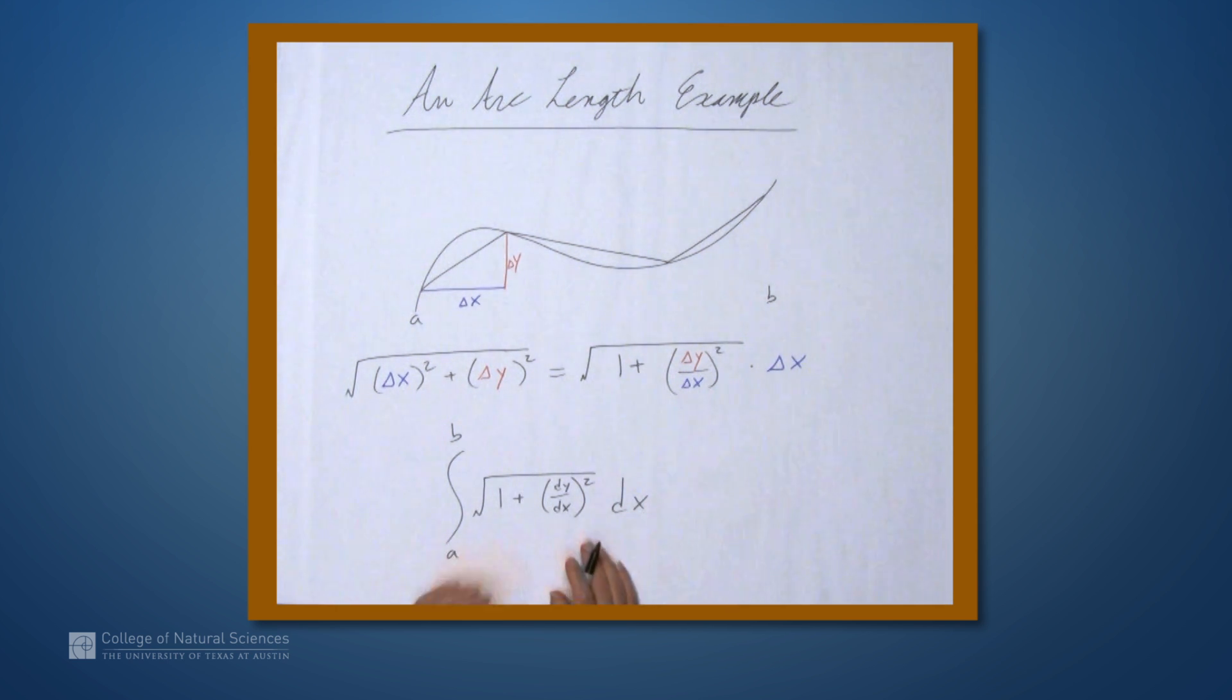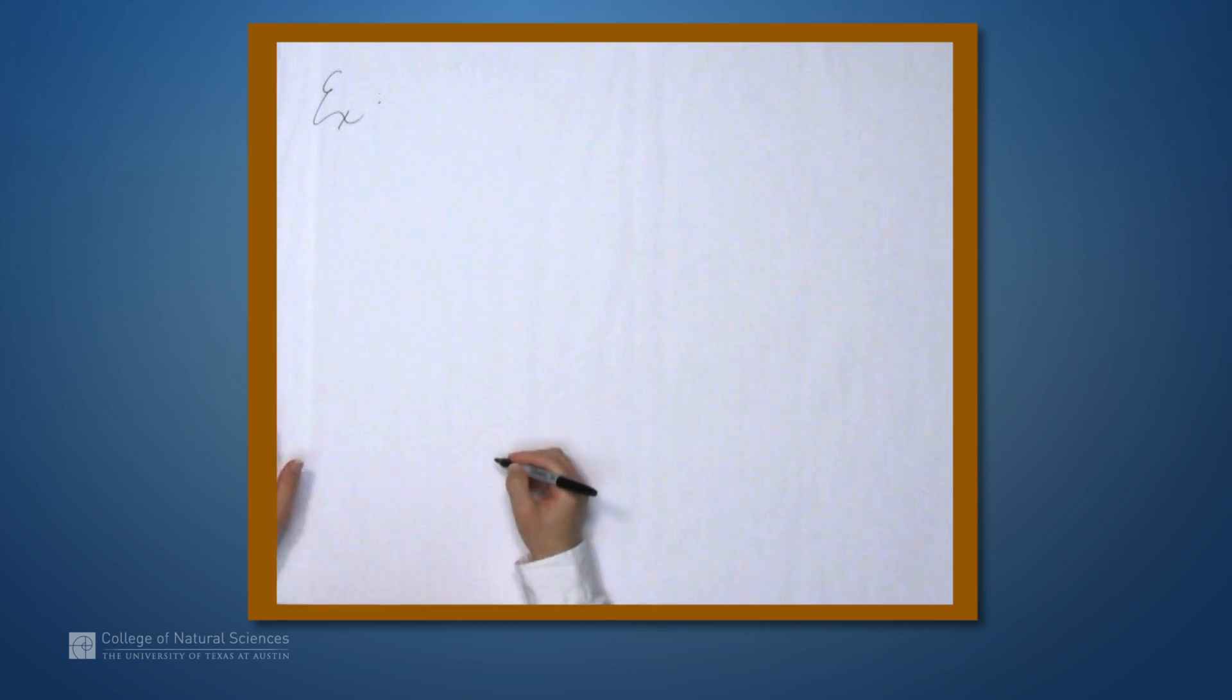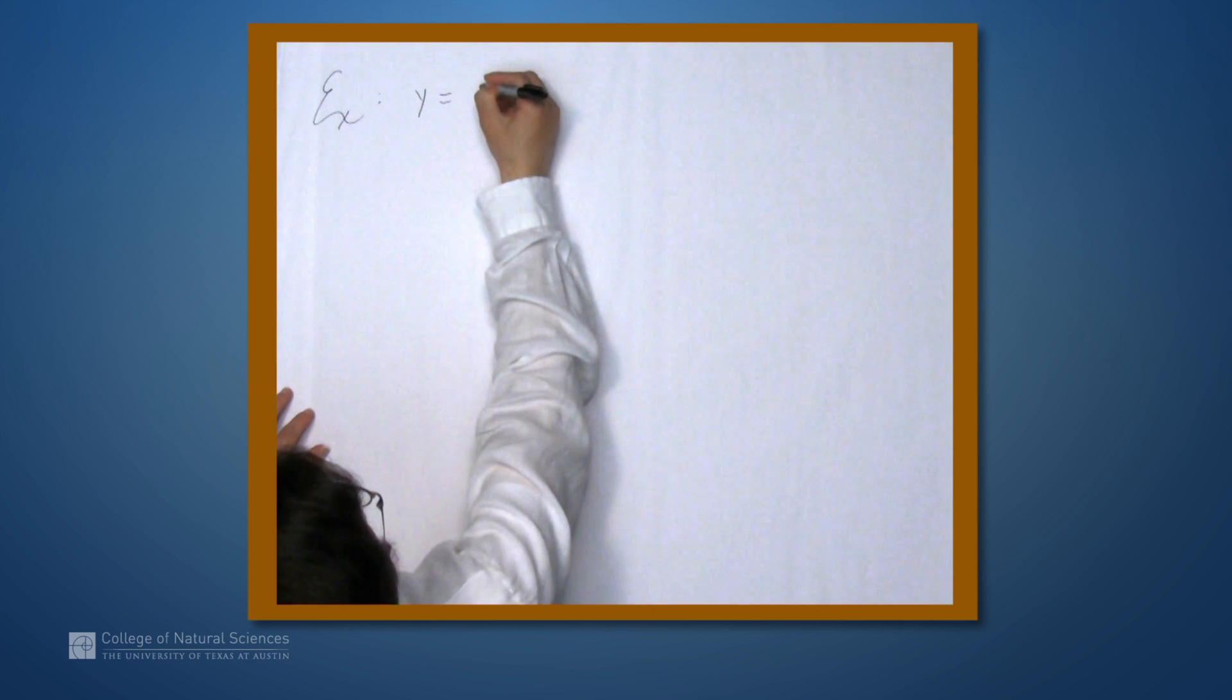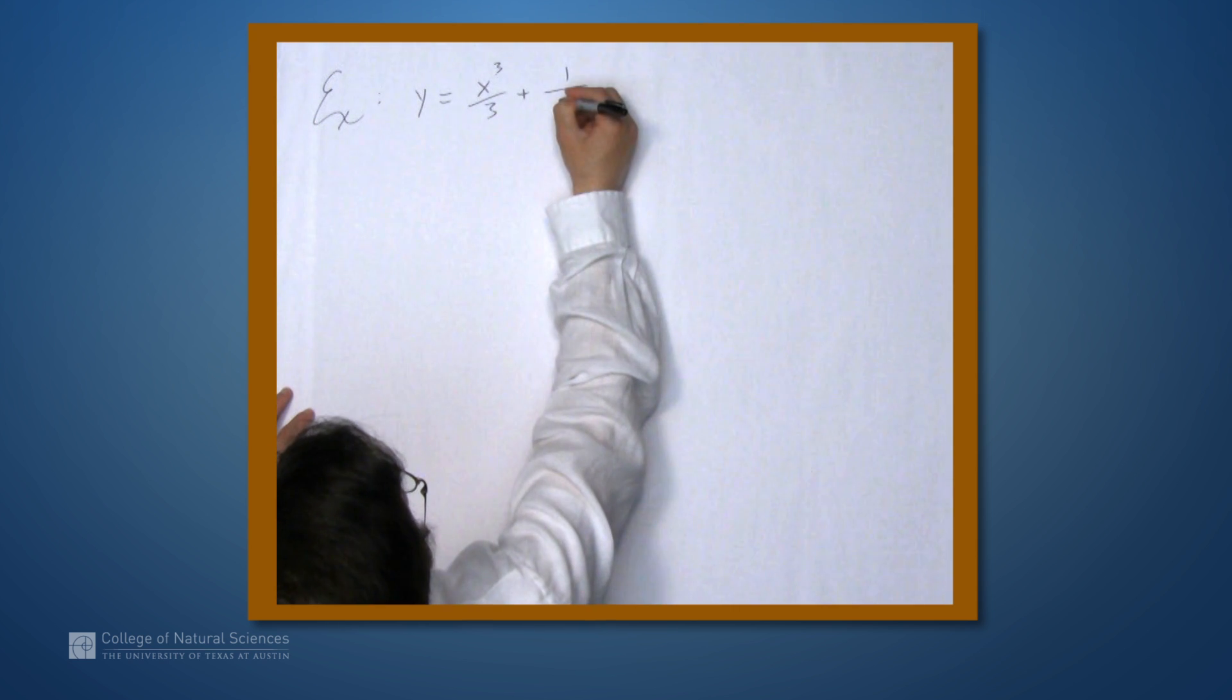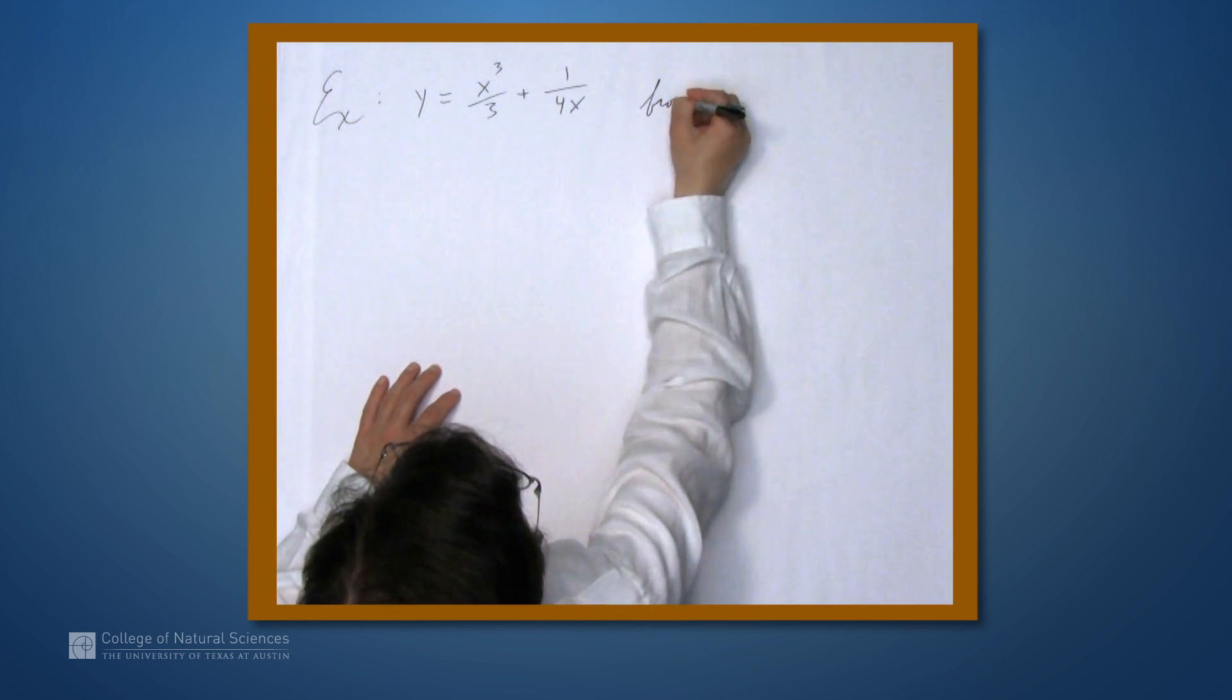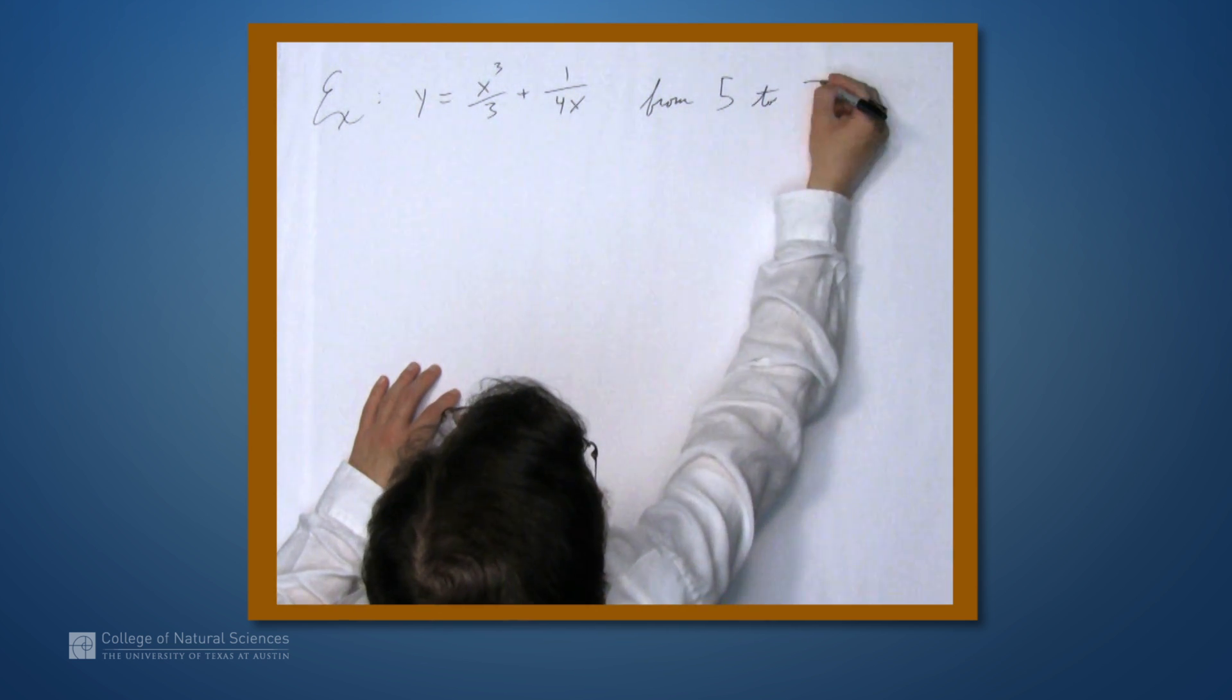So this is our arc length formula and our informal argument in support of it. So let's look at an example. So let's find the arc length of y equals x cubed over 3 plus 1 over 4x from 5 to 7.